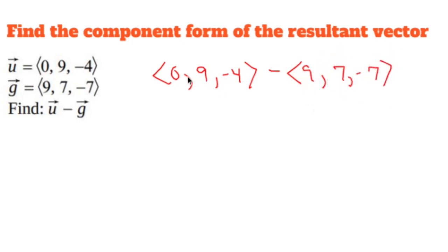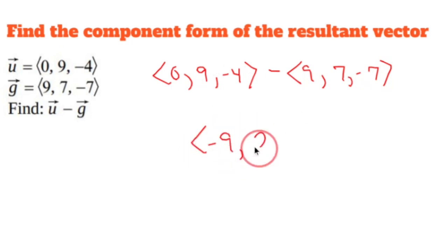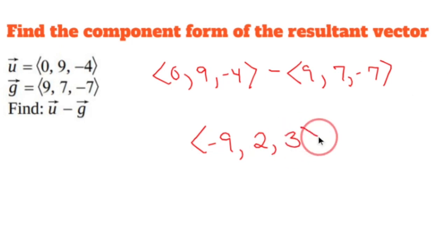Zero minus nine is negative nine, nine minus seven is two, negative four minus negative seven — double negative is three, and we're done.